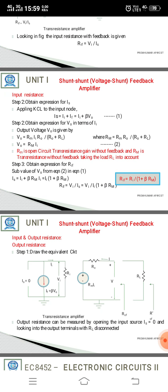Similarly, we have to find out the output resistance. In step 1, draw the equivalent circuit. In this topology, the output resistance can be measured by setting is equal to zero and looking into the output terminals with RL disconnected, as shown in the figure. Obtain the expression for i in terms of v.